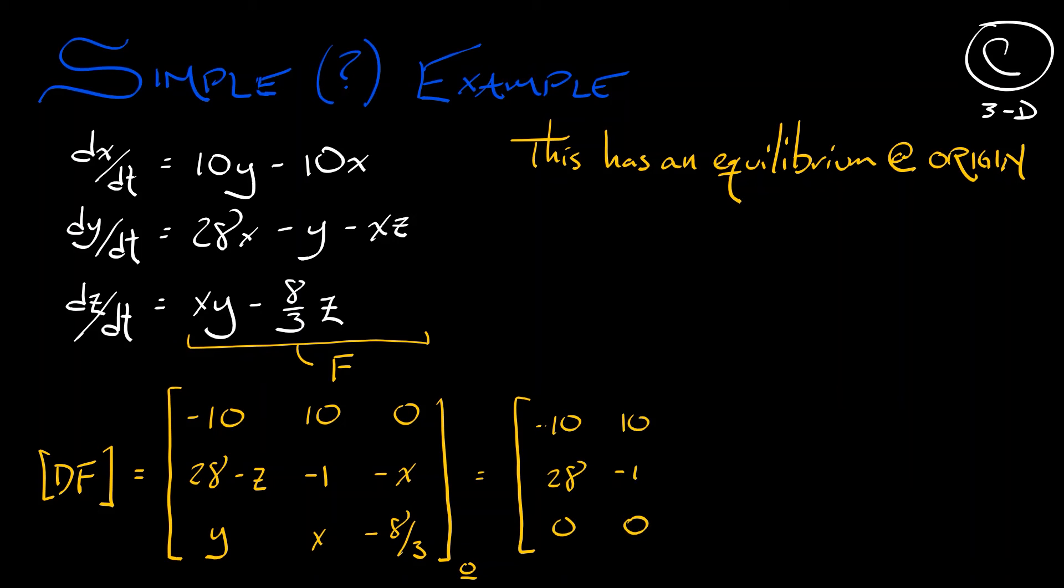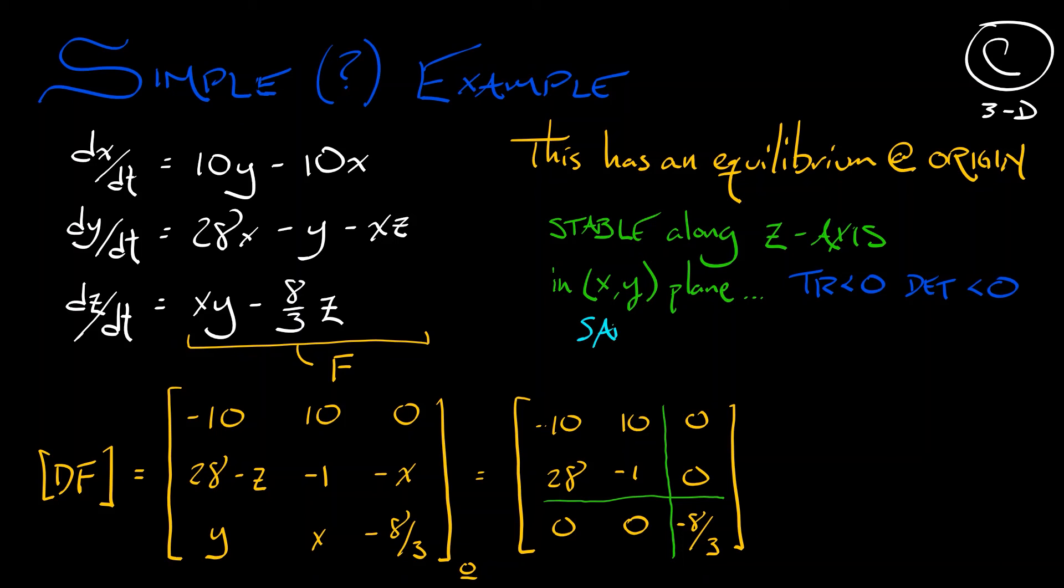This derivative varies from place to place. If we evaluate the derivative at the origin, set x, y, and z equal to 0, we get a numerical matrix that has a really nice block diagonal structure. And what that block diagonal structure tells us, in particular, is that if we look at that last eigenvalue along the z direction, that negative 8 thirds, that means that we have a stable eigenspace there along the z-axis. Everything is coming in. What about the other eigenspaces? Well, this is going to be spanned by the x, y-plane because of this block structure. Isolating that two-by-two block, what do I see? I see trace is negative, determinant is negative. That means we've got a saddle in that x, y-plane.